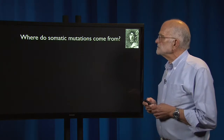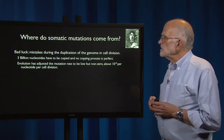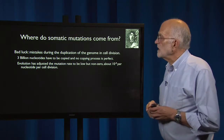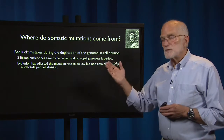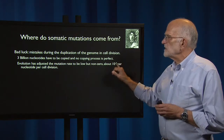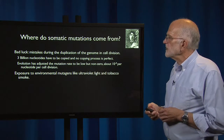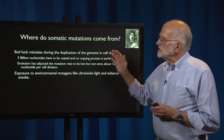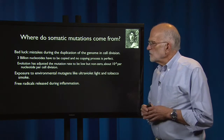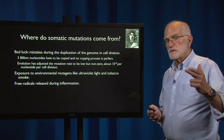So where do somatic mutations come from? Well, some of it's bad luck. There are mistakes during the duplication of the genome and cell division. Every time a cell divides, about 3 billion nucleotides have to be copied, and no copying process is perfect. Evolution has also adjusted the mutation rate long term to be low but non-zero — it's about 10 to the minus ninth per nucleotide per cell division, about one in a billion probability that a single nucleotide at a specific site will mutate in a cell division. Somatic mutations can be increased by exposure to environmental mutagens like ultraviolet light or tobacco smoke. There are also free radicals released during inflammation, so inflammation can actually cause somatic mutation.